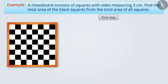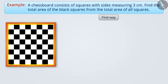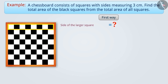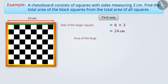One way is to find the area of the larger square. For this, we have to find the side of the larger square. On a chessboard, one row has 8 squares and the sides of each square measure 3 cm. Therefore, the length of the side of the larger square will be 8 multiplied by 3, that is 24 cm. The area of the larger square is side multiplied by side, equal to 24 cm multiplied by 24 cm, which equals 576 cm².